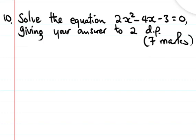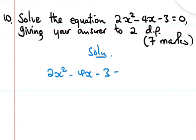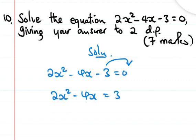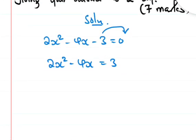So let's solve this one. We have the equation 2x squared minus 4x minus 3 is equal to zero, and we will use completing the square. The first step is to take the third term, which is our constant, and move it to the right hand side: 2x squared minus 4x equals 3.